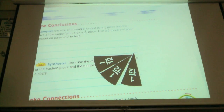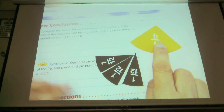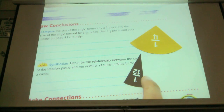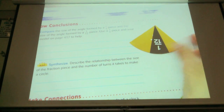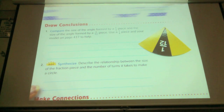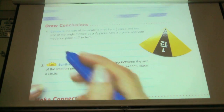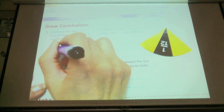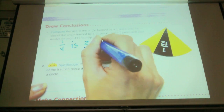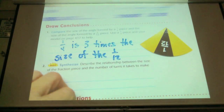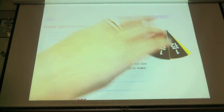Compare the angle formed by a one-fourth piece and the size of the angle formed by one-twelfth. The fourth is three times bigger than one-twelfth. The one-fourth is three times the size of the one-twelfth — because if we put three of the one-twelfths together, they equal the same size as one-fourth.